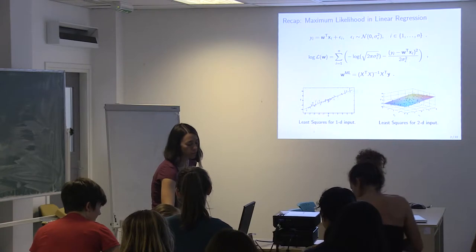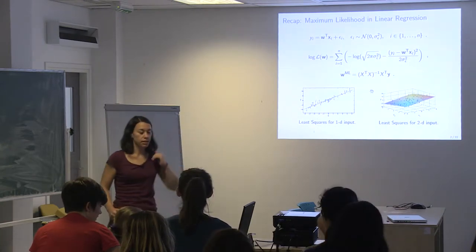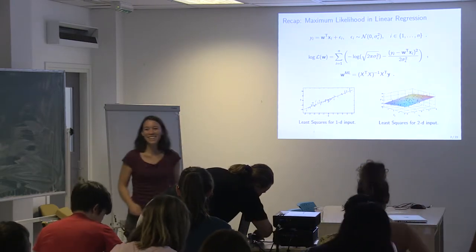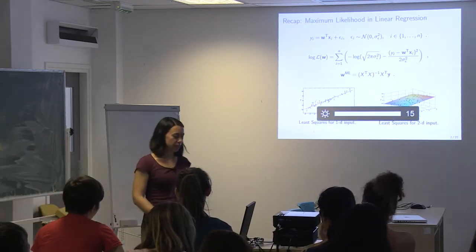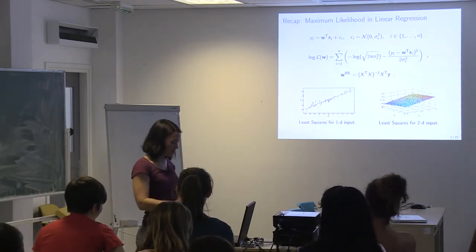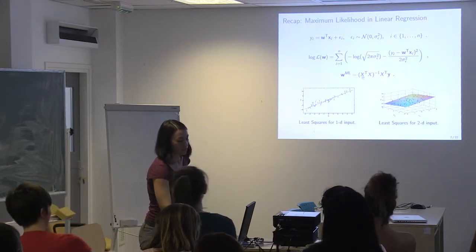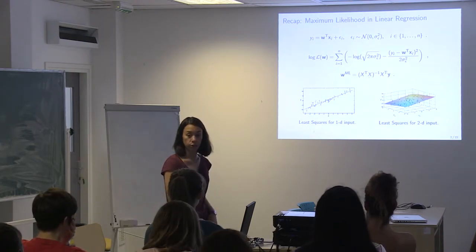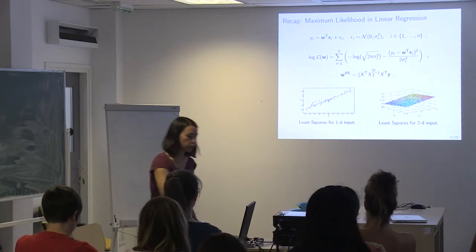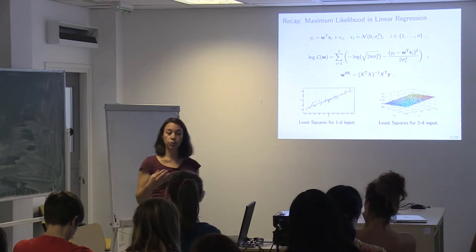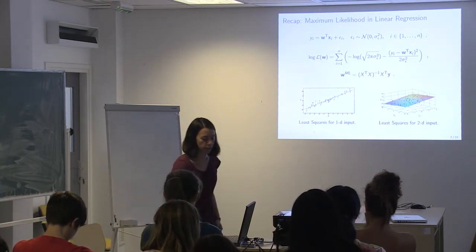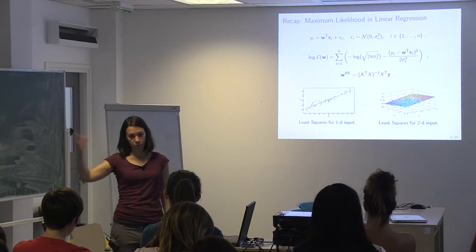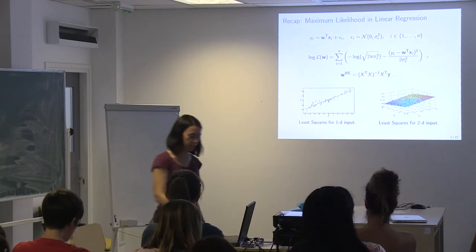This is equivalent to minimizing the least squares — so how far away our points are from a line, if we have just one input; how far away they are from a plane if we have 2D; and then we talked about hyperplanes which we can't visualize anymore in 3D.